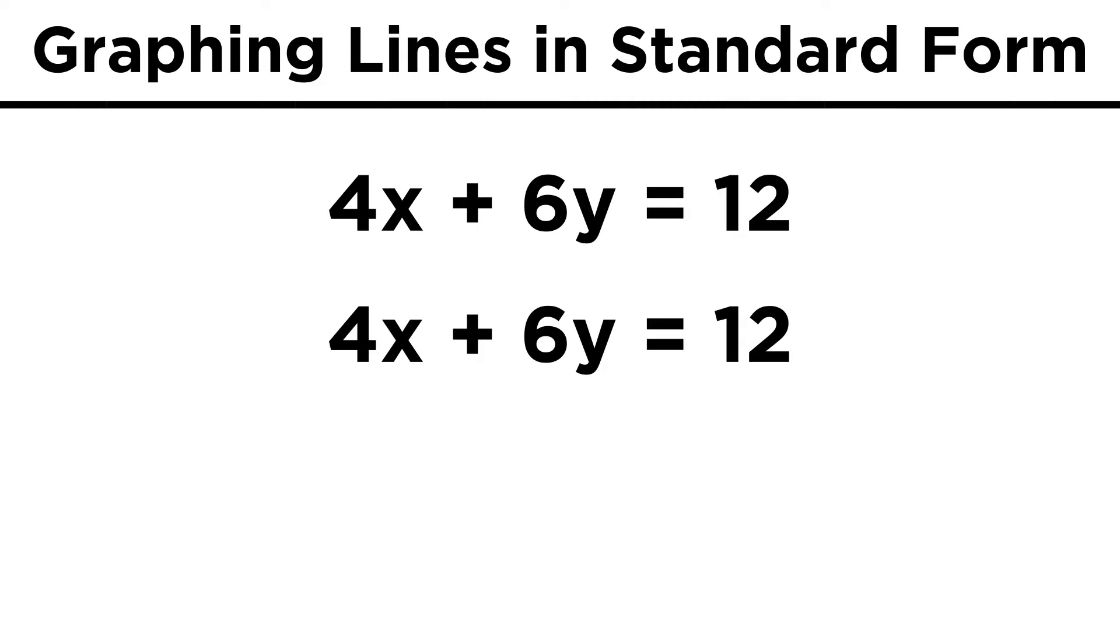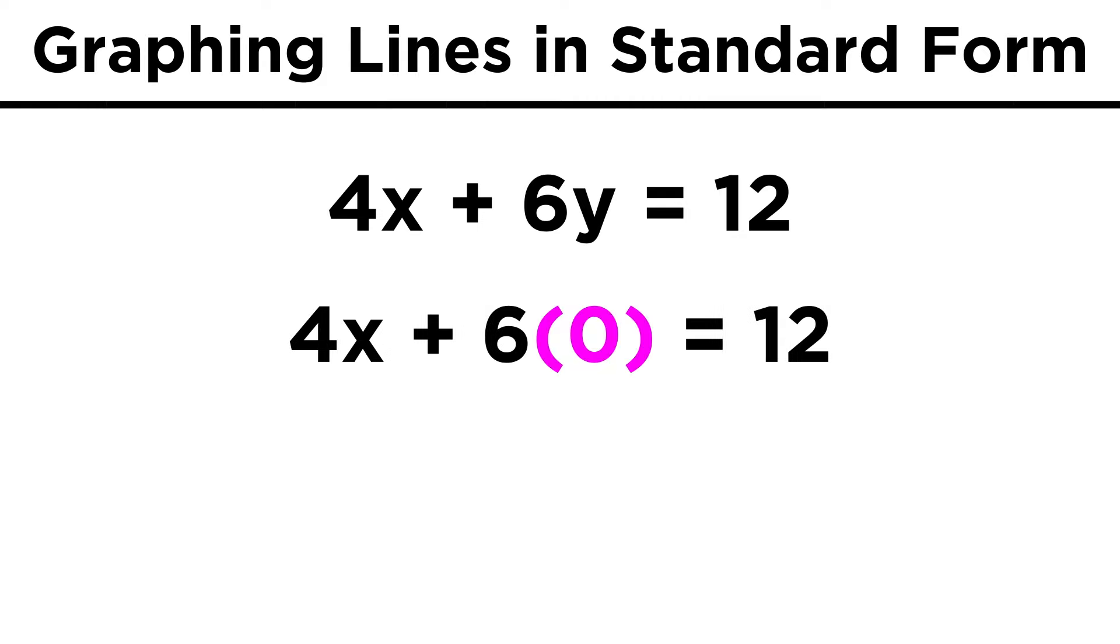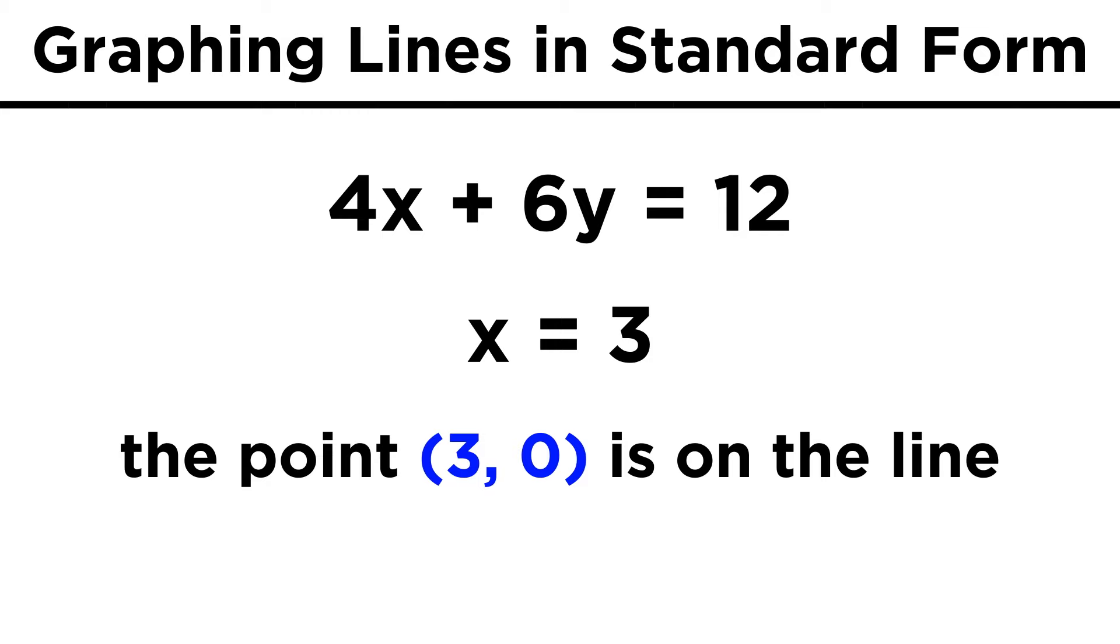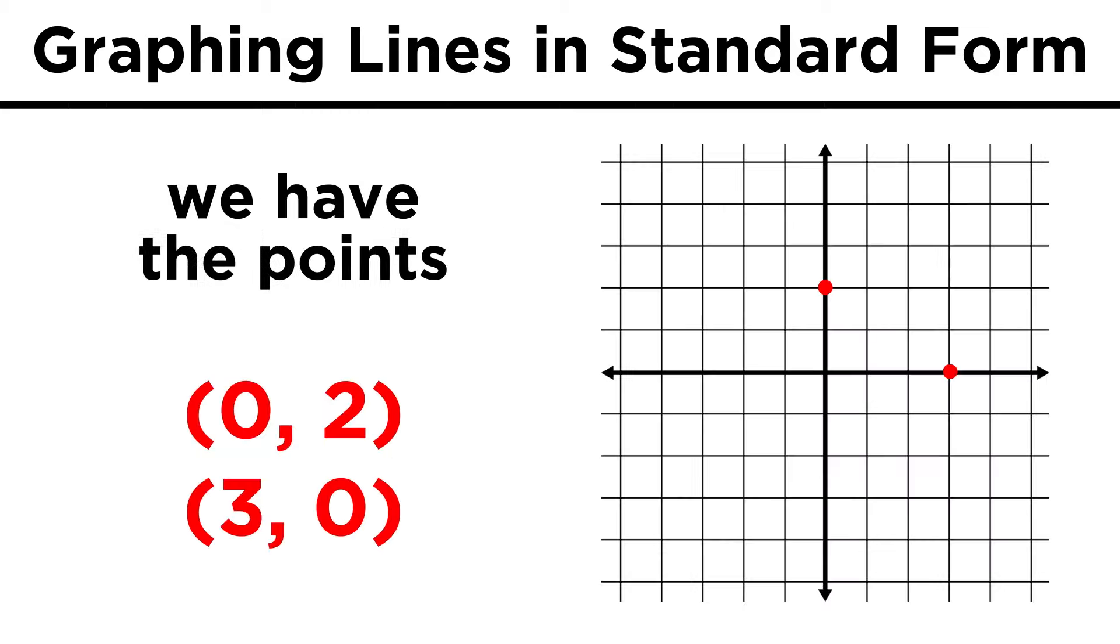Then to find the x-intercept, we plug in zero for y. The y term will go away, four x equals twelve, and x equals three. That means the x-intercept is the point three zero. With two points on the line now apparent, we are ready to draw the line, and that's all there is to it.